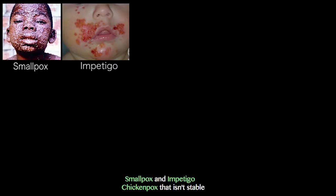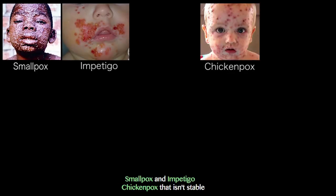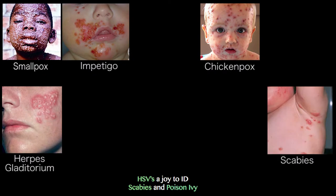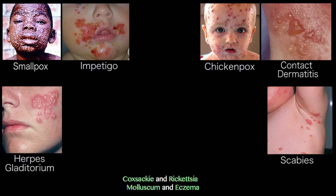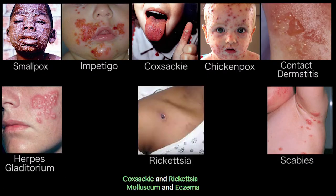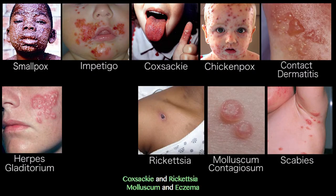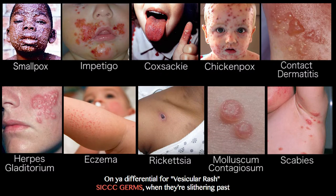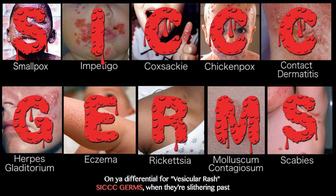Smallpox and impetigo, chicken pox that isn't stable, HSVs, enjoy the IDS — KBs and poison ivy, Coxsackie and Rickettsia and Molluscum and Eczema — on your differential for a vesicular rash.